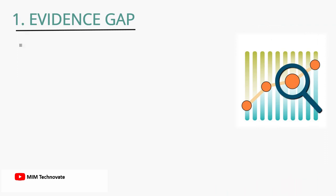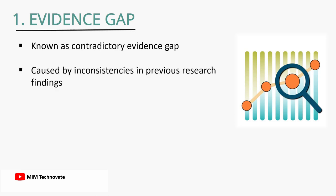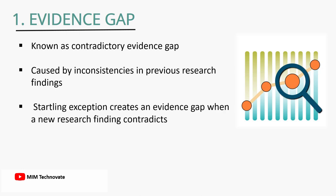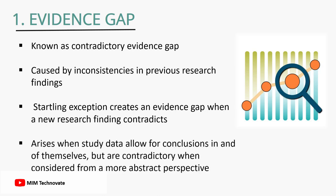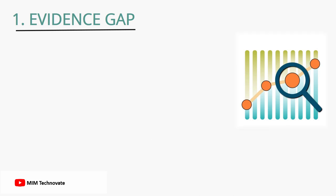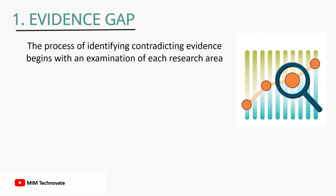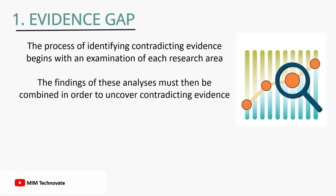Evidence gap, also known as contradictory evidence gap, is caused by inconsistencies in previous research findings. A startling exception creates an evidence gap when a new research finding contradicts widely accepted conclusions. It arises when study data allow for conclusions in and of themselves but are contradictory when considered from a more abstract perspective. Identifying contradicting evidence begins with an examination of each research area, and the findings must then be combined to uncover contradicting evidence.